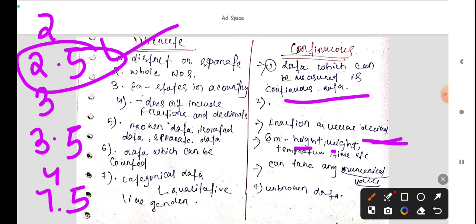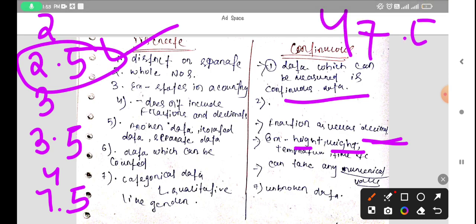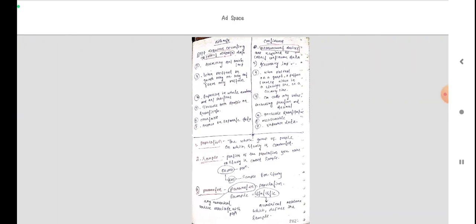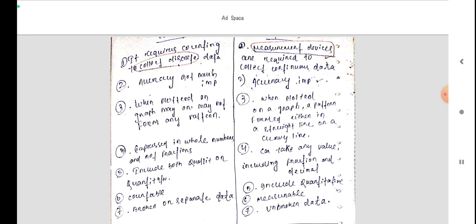Example, height, weight. We ask, what is the weight? 47.5 or 59.5. It can take any decimal. And this is unbroken data.